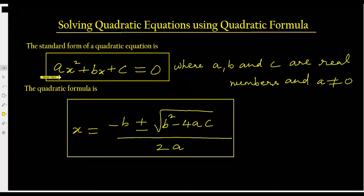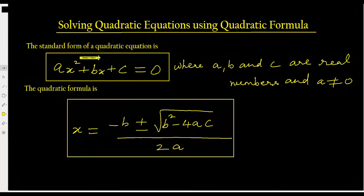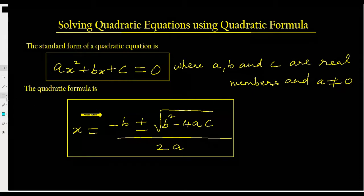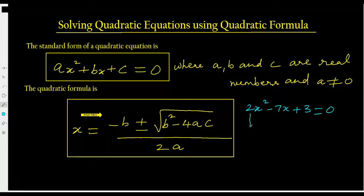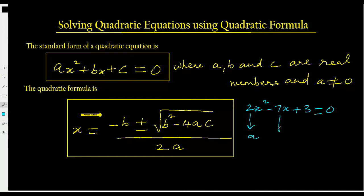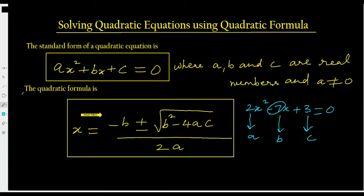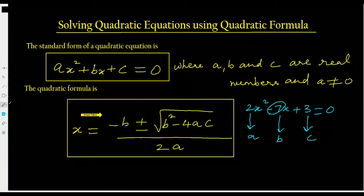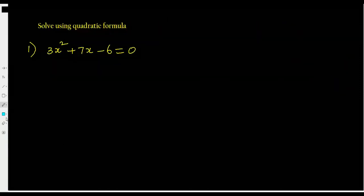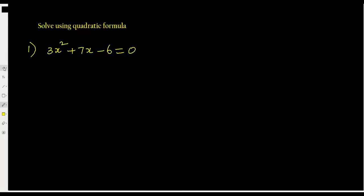What we are going to do is compare the given equation with the standard form, pick up the a, b, c values, and substitute them into the formula — that's all. For example, if the given equation is 2x squared minus 7x plus 3 equals 0, then a equals 2, b equals negative 7, and c equals 3.